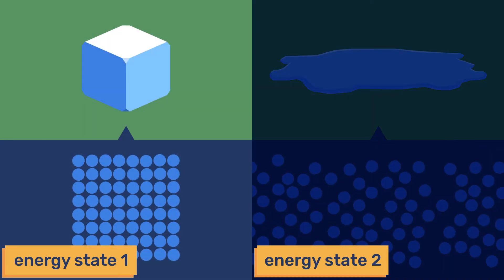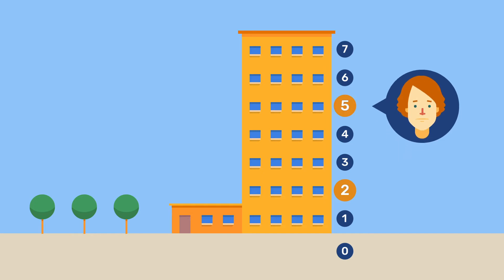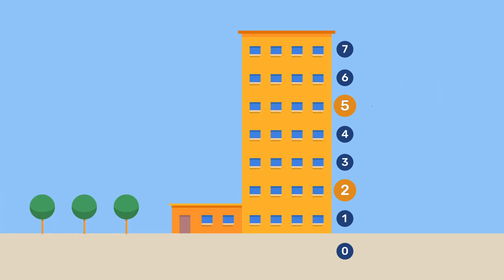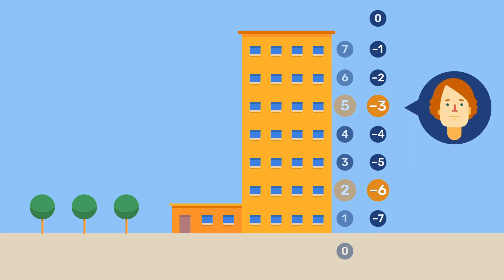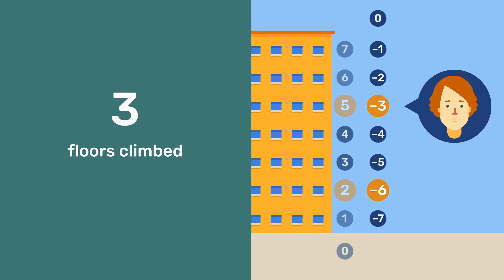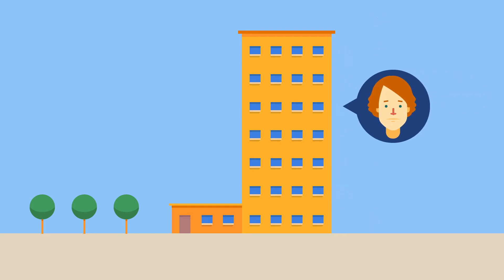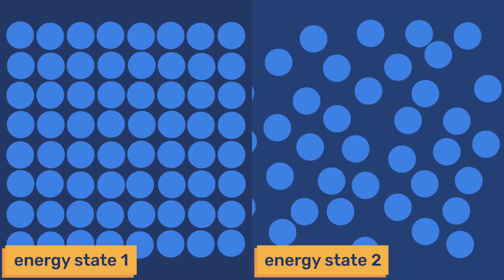Thermodynamics generally considers changes in energy states after and before a transformation. Imagine that you are in a building and climb from an initial floor 2 to a final floor 5. The number of floors you climbed is 5 minus 2 equals 3. If the floor considered 0 had been chosen at the top of the building, you would be climbing from floor minus 6 to floor minus 3. The number of floors climbed would be minus 3 minus minus 6, which is equal to 3 as before. This is a very important result because it eliminates the role of the arbitrary choice of a reference level. In a similar way, by dealing with energy changes, thermodynamics downplays the arbitrary question of the reference state.